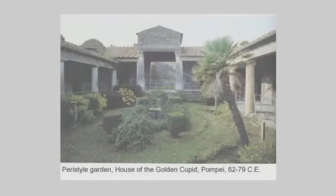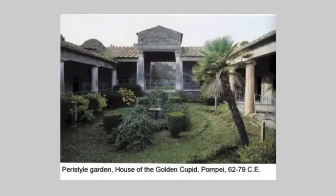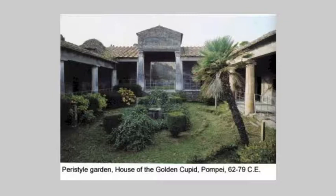When you go out through the exedra into the garden, this is the kind of garden you would find — usually an enclosed garden, very symmetrical in its organization, highly ordered, with a fountain in the center. As you'll see in the next slide, there were often picnic areas set out where the family could eat outdoors.